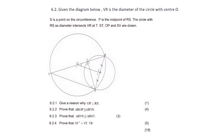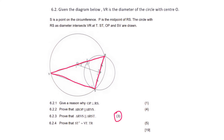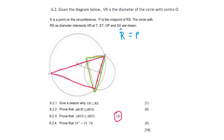Question 6.2.3 asks us to prove another similarity — RVS and RST are similar. Once again, angle R is the same for both triangles, so angle R equals angle R, and that's common.